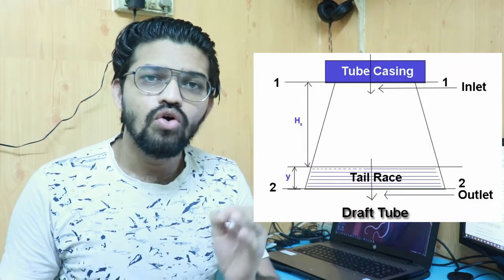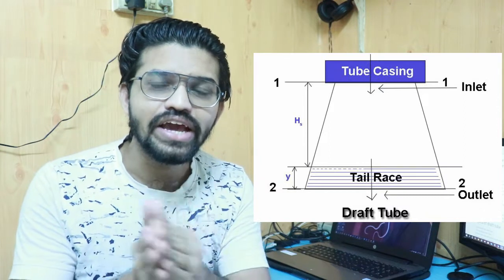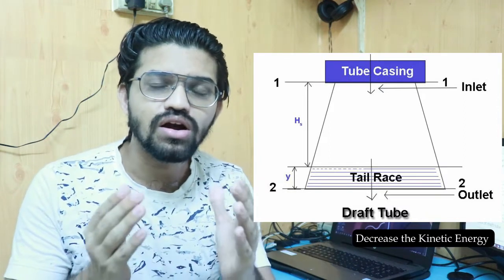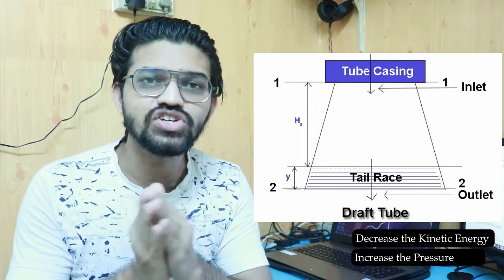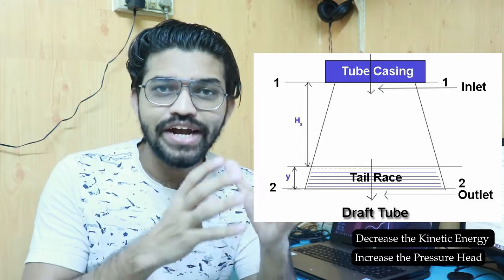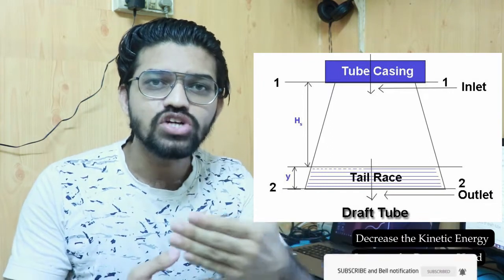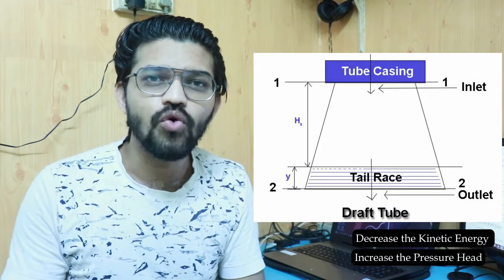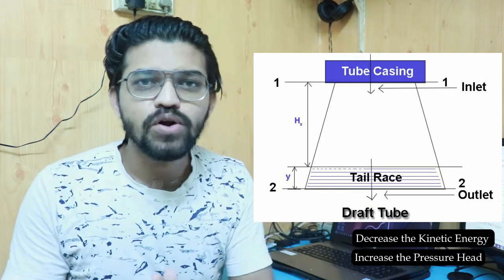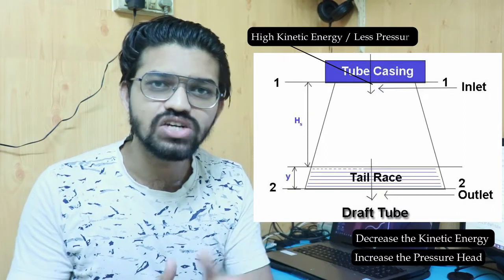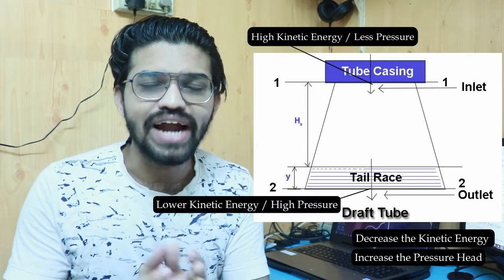When water comes out from the turbine it has higher kinetic energy and lower pressure head. In the draft tube, because of the increasing cross-sectional area, the kinetic energy of the water gets reduced and the pressure head increases. The draft tube converts the kinetic energy of the water into pressure energy — it increases the pressure from section 1 to section 2. Section 1 represents the inlet where water has higher kinetic energy, and at section 2 the water has lower kinetic energy and higher pressure.